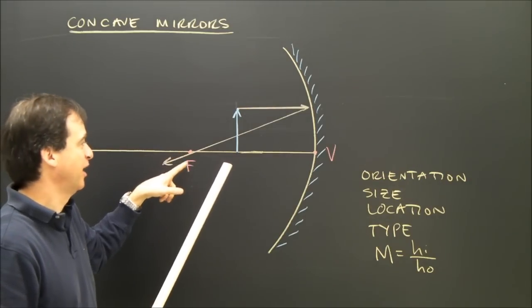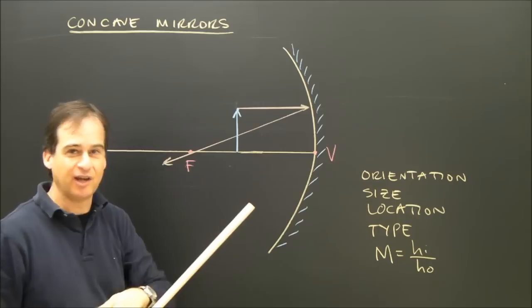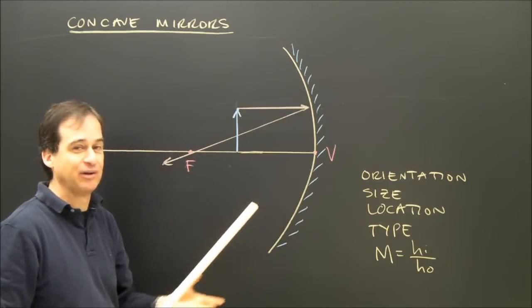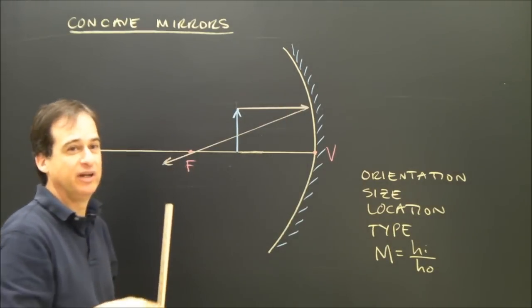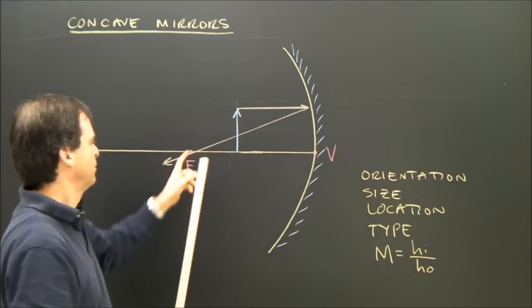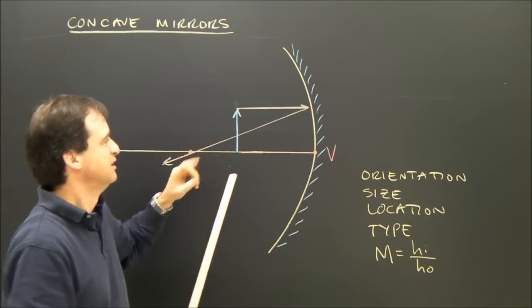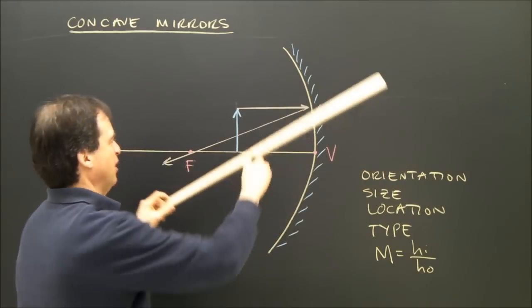The second ray goes through the focus and reflects parallel. So this is parallel, reflects through the focus. The other one goes through the focus, reflects parallel. But the focus is over here. So I have to do this in a kind of weird way.